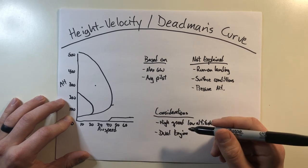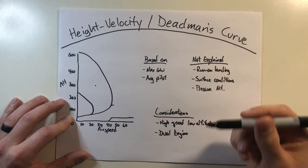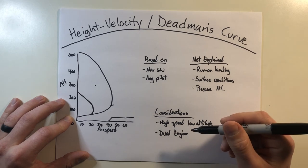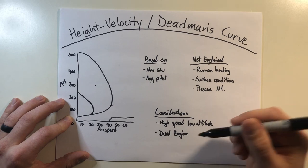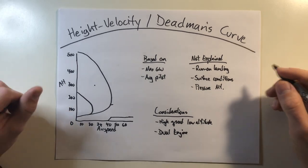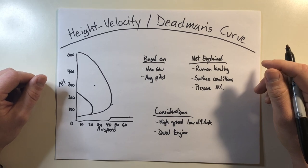But that wraps up the height velocity slash dead man's curve. It's simply an area that you may want to avoid or just not linger in because it's unlikely that you can safely recover the helicopter if you do lose an engine. If you enjoyed the video, be sure to hit like and subscribe below. Once again, I'm Jacob, and this has been Helicopter Lessons in 10 minutes or less. Safe flight.